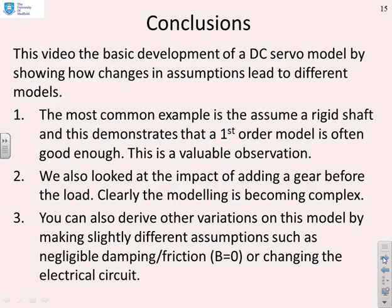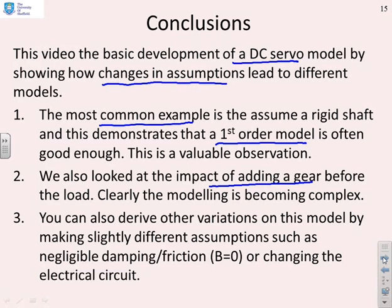So some conclusions. What we've done in this video is we've done a basic development of a DC servo model by showing how some changes in assumptions lead to different models. Now, the most common example is to assume a rigid shaft, and we've shown that this gives you a first order model. And in fact, that's very common. And first order dynamics are quite a good observation, where you just have a simple load and a simple friction. We've also looked at the impact of adding a gear. And what you'll notice is if you put gearing on the end, the modeling is beginning to become quite complex. Now, there are other assumptions, and we've not looked at those. And really, we would suggest if you need to, you should be skilled enough to look at those yourself.